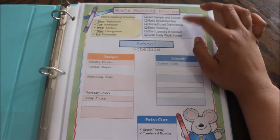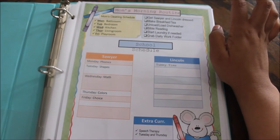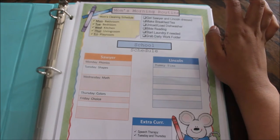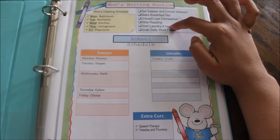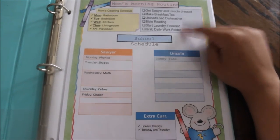Unload and load the dishwasher, which I did this morning. My Bible reading, which I haven't done because last minute got thrown at me that we have to go to the mechanics. So start laundry if needed, which I already did. And then grab the daily work folder before we start school, which we already did school today.